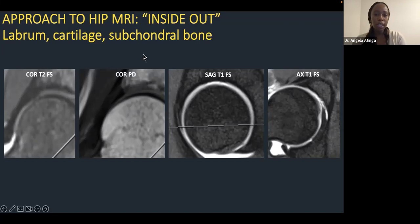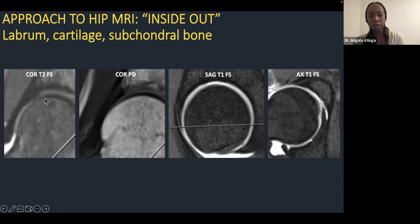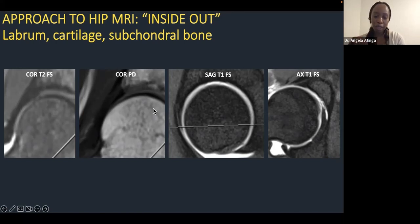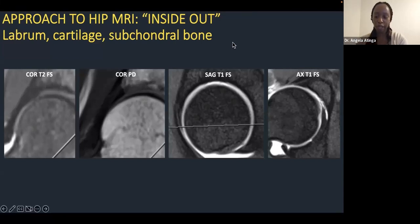After cartilage, interrogate the subchondral bone — that condensation of cortex immediately adjacent to the cartilage. If you have cartilage pathology, you'll start to get reactive changes in the subchondral bone. This is also the interface relevant for subchondral fractures, avascular necrosis, and degenerative changes in any joint you're examining.